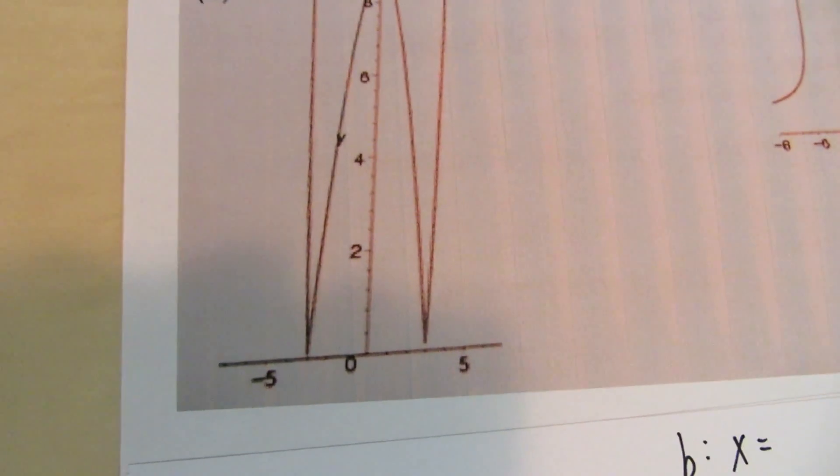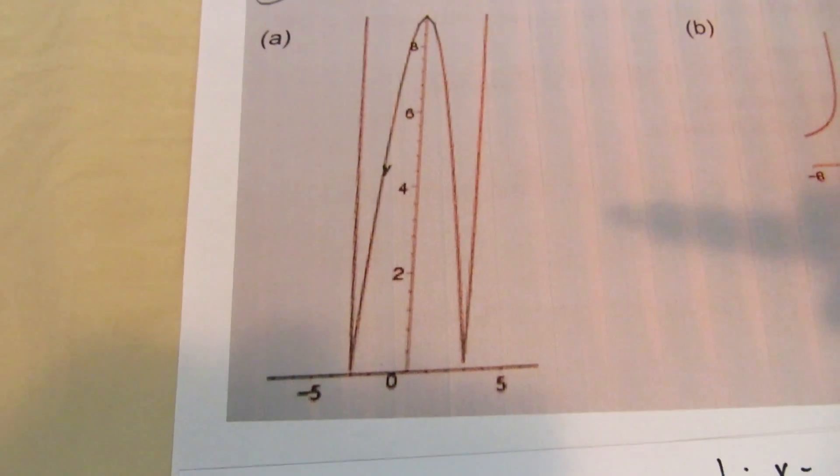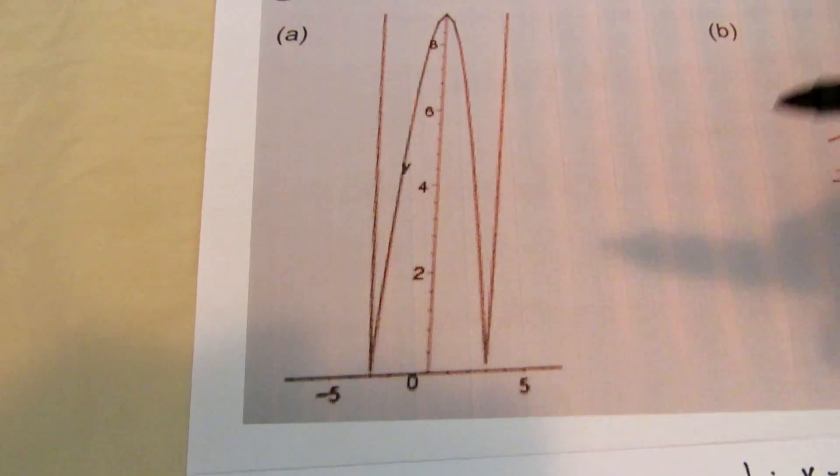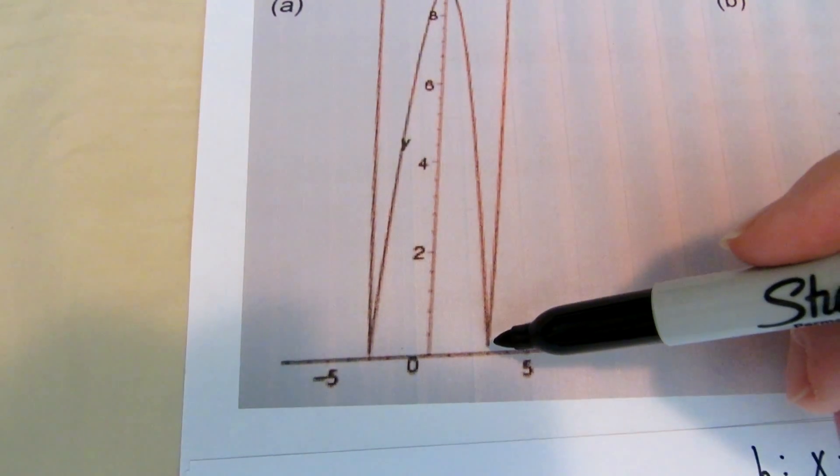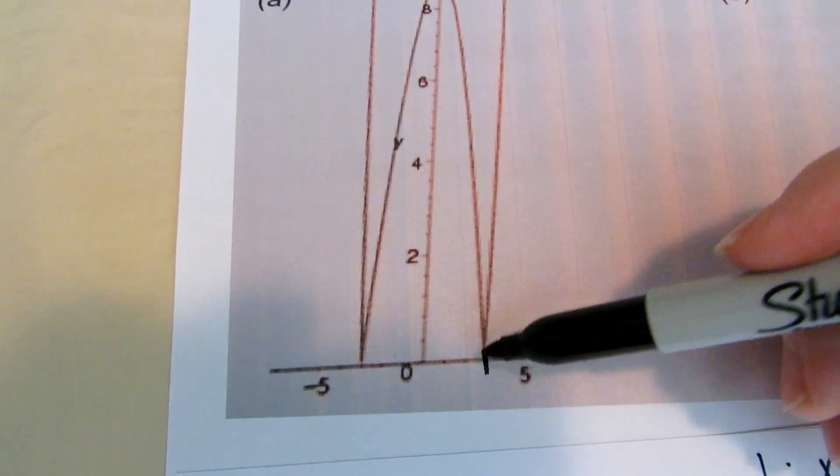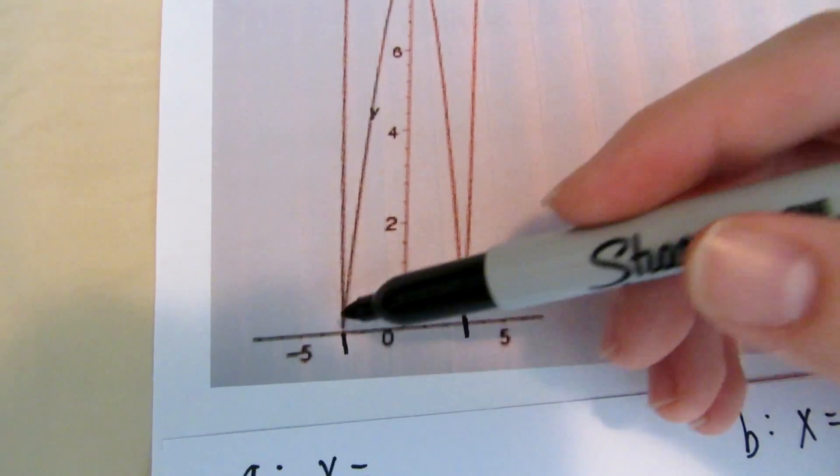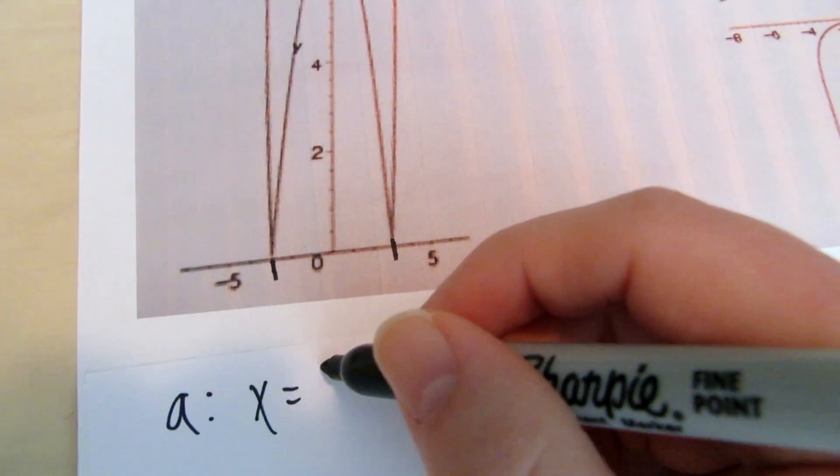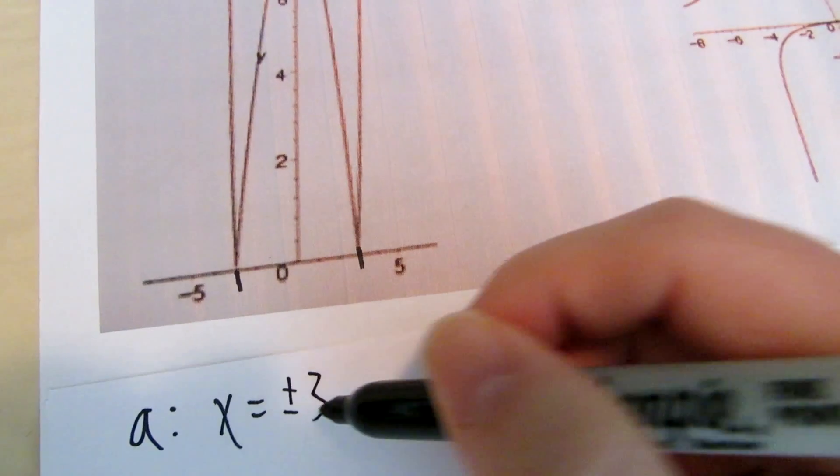So for part a, you can see the first thing you look for is the sharp turns, which it has both a sharp turn at positive 3 and negative 3. So we already know that x is equal to positive and negative 3.